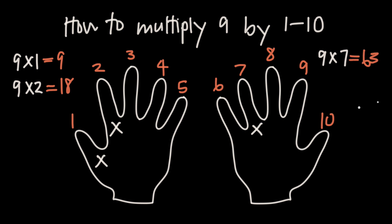If we want to do 9 times 9, we bend down the 9th finger. We can see that we have 8 fingers on the left and just 1 finger on the right. So 9 times 9 is equal to 81.